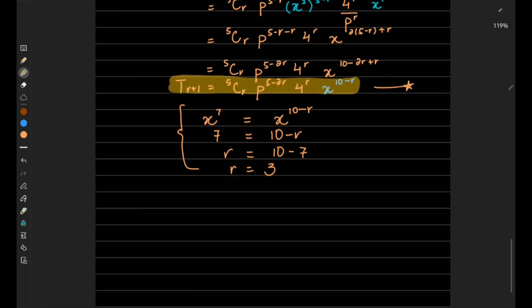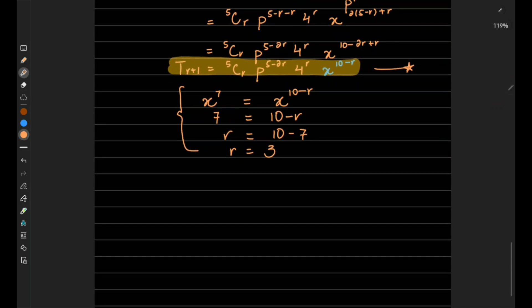Now substituting in this r value: T_(3+1) equals 5C3 p^(5-2×3) 4^3.